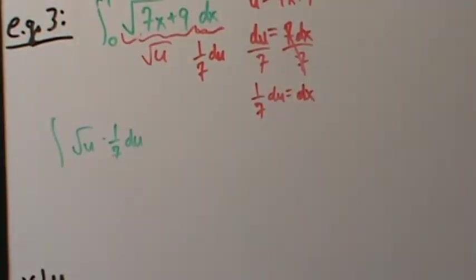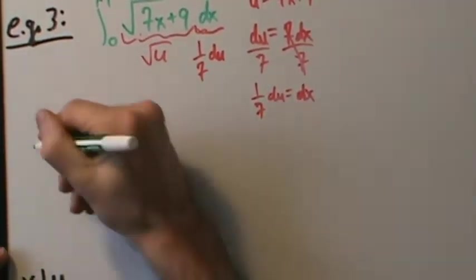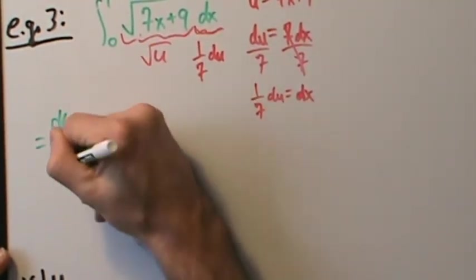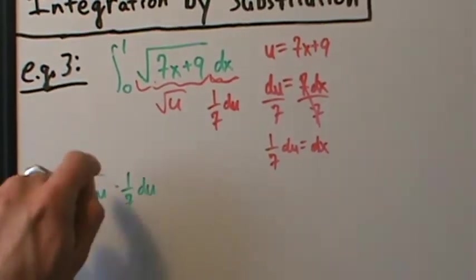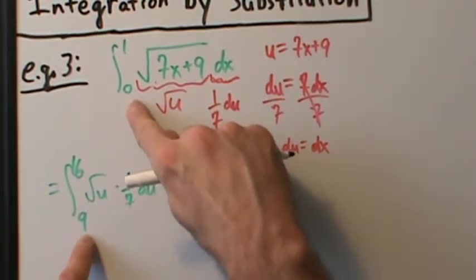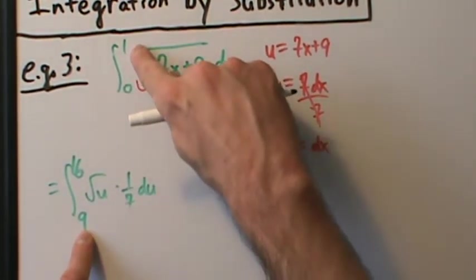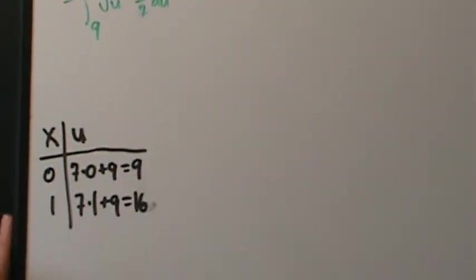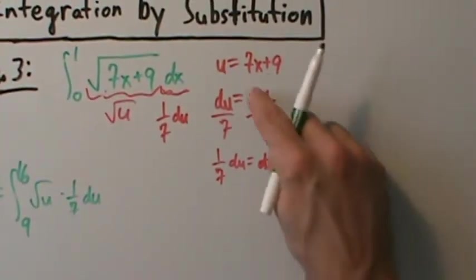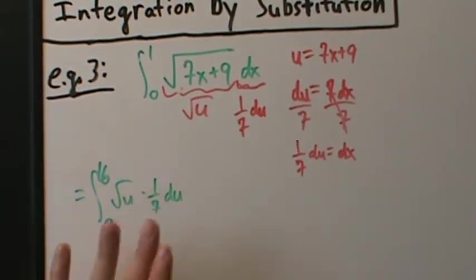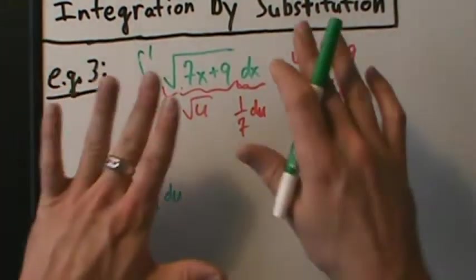We found that the limits are 9 and 16: when x = 0, u = 9; when x = 1, u = 16. We used the substitution we made to evaluate u. What's great about this is we're completely done with x — we can forget about x entirely.